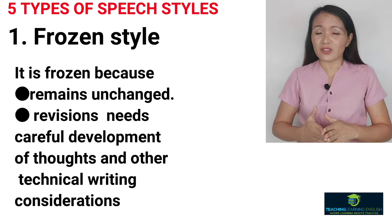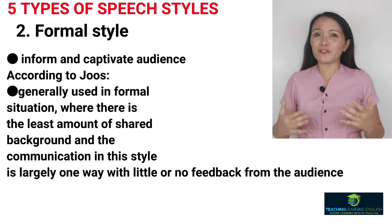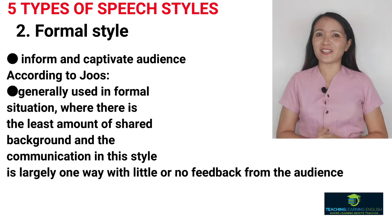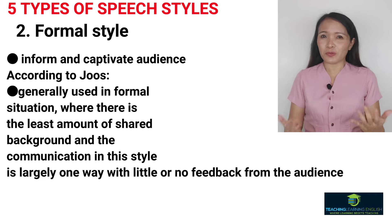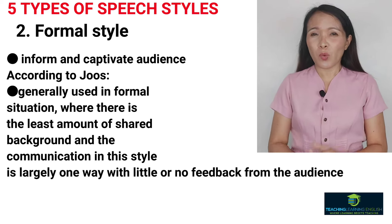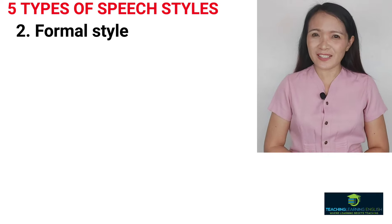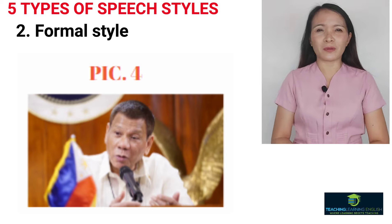The second type is formal style. Its aim is to inform and to captivate the audience. According to Joos, formal style is generally used in formal situations where there is the least amount of shared background, and communication in this style is largely one-way with little or no feedback from the audience. In speaking, what the speaker says is something that has been prepared — meaning it is scripted. In the dialogues shown earlier, the best example for formal style is picture four: President Duterte delivering his speech. Other examples are sermons.